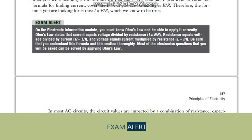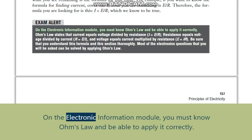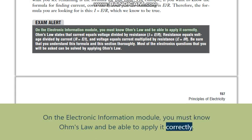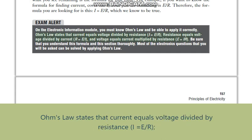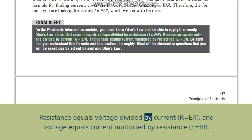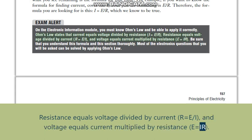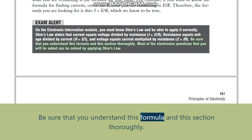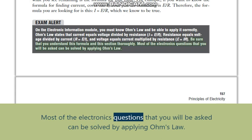Exam alert. On the electronic information module, you must know Ohm's law and be able to apply it correctly. Ohm's law states that current equals voltage divided by resistance (I equals E slash R), resistance equals voltage divided by current (R equals E slash I), and voltage equals current multiplied by resistance (E equals IR). Be sure that you understand this formula and this section thoroughly. Most of the electronics questions that you will be asked can be solved by applying Ohm's law.